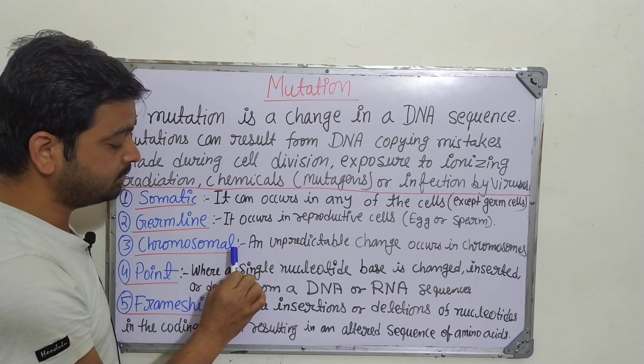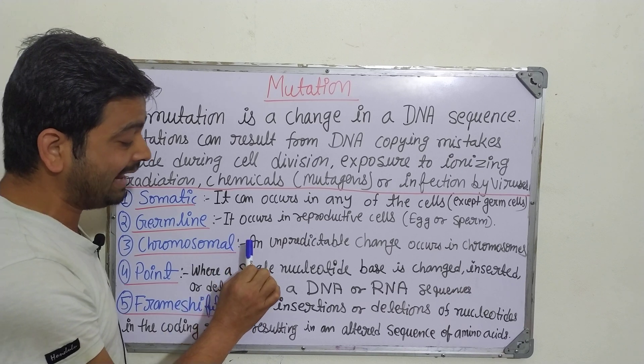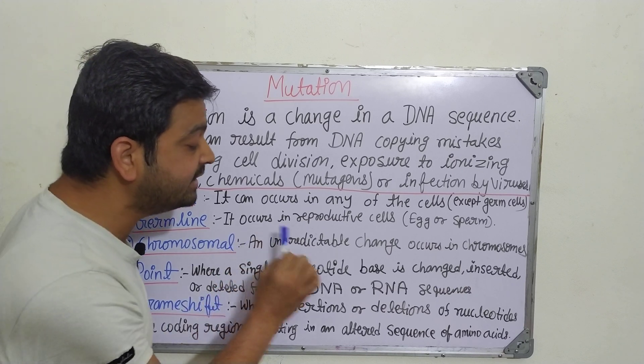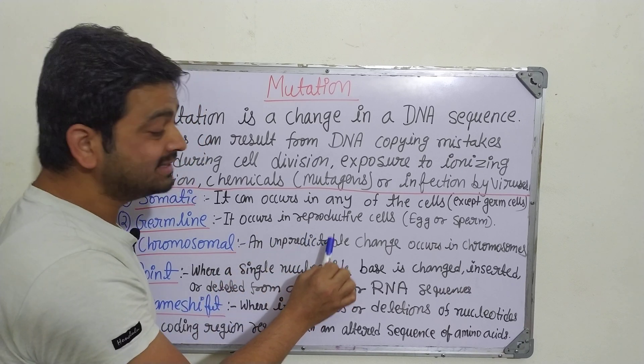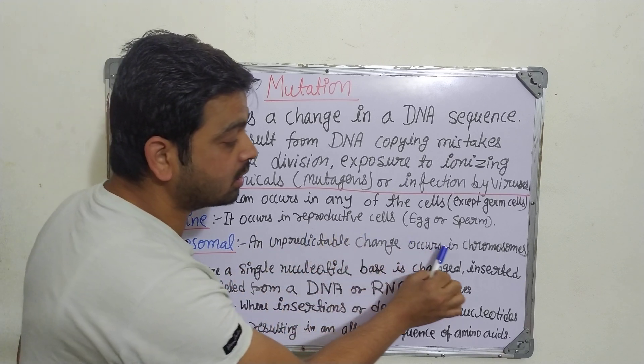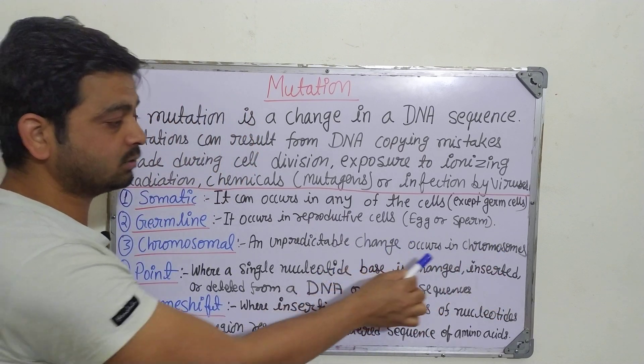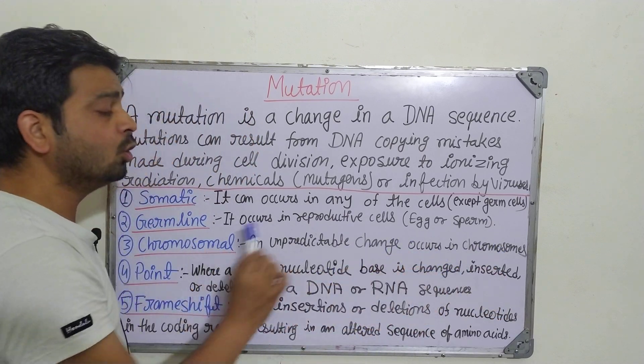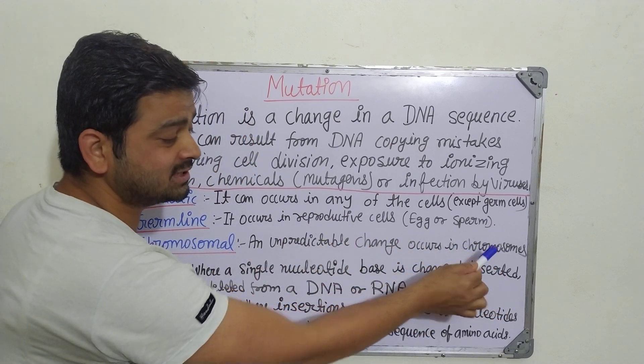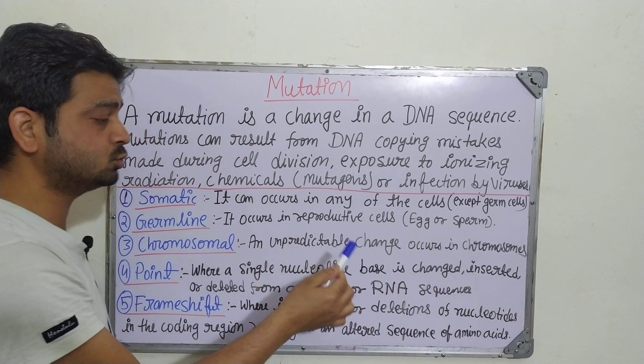Coming to the third type: chromosomal mutation. Chromosomal mutation is nothing but unpredictable changes that occur in chromosomes. So changes occurring in the chromosomes are called chromosomal mutations.